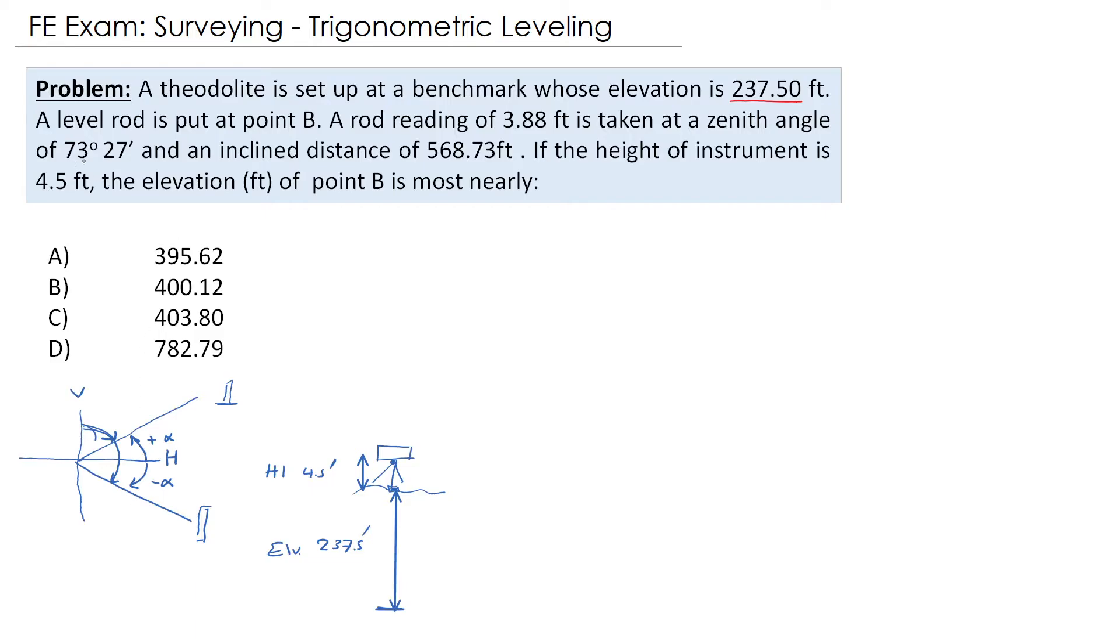Now our angle is 73.27, it's a zenith angle. That means we are less than 90, we are looking up. So that means our object is stationed upward. This is our rod here.